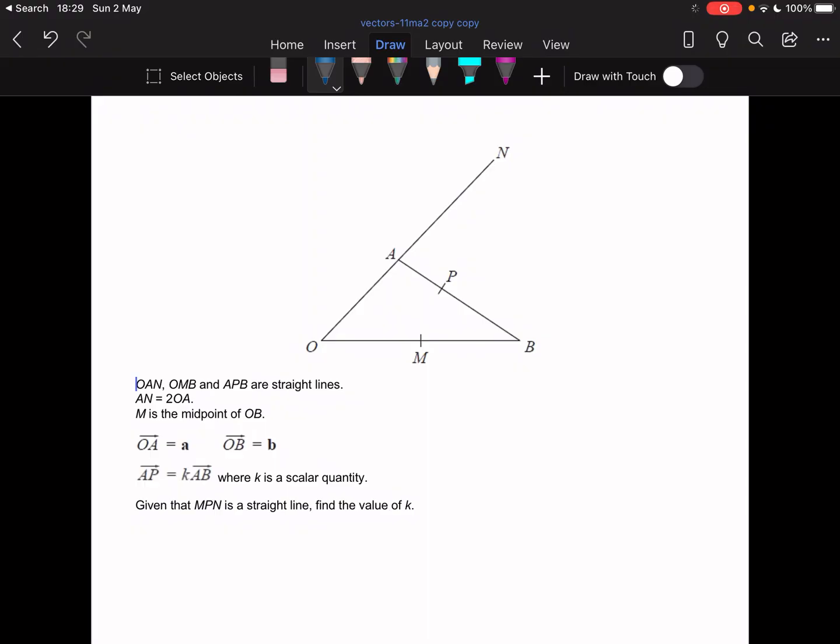It says OAN, OMB and APB are straight lines. AN equals 2OA, and we're going to have to annotate that, probably.